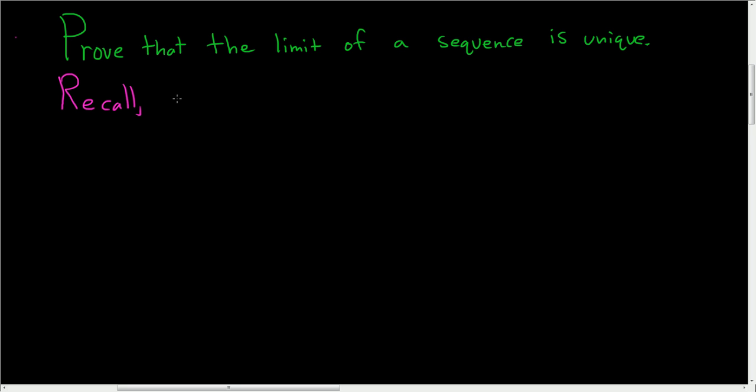So a sequence a sub n has a limit, say L, if a sub n converges to L. So what does this mean?